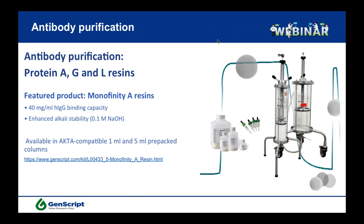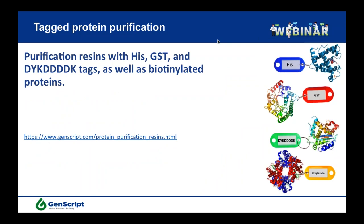For antibody purification, we provide different types of resins — affinity purification-based protein A, protein G, and L resins. Our featured resin product is Monofinity A resin, which is a protein A resin where protein A has been mutated to be alkaline resistant, so the resin can be washed with NaOH multiple times and reused. It is available in ÄKTA-compatible 1 mL and pre-packed 5 mL columns. For tagged protein purification — such as His-tag, GST-tag, FLAG-tag, or biotinylated proteins — we also supply resins.